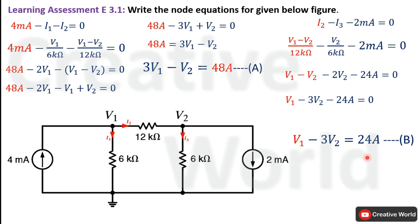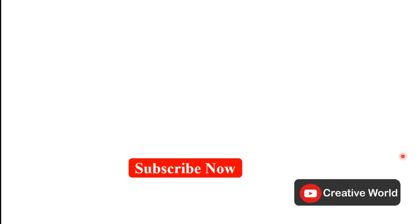As discussed, this network has 3 nodes, one of which is the reference or ground node, so there are 2 node equations. These two equations are 3V1 − V2 = 48 and V1 − 3V2 = 24 respectively. This completes learning assessment E3.1.